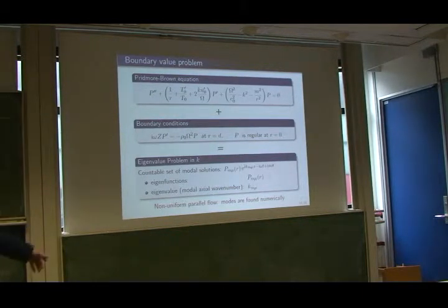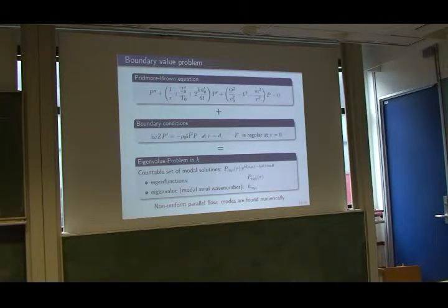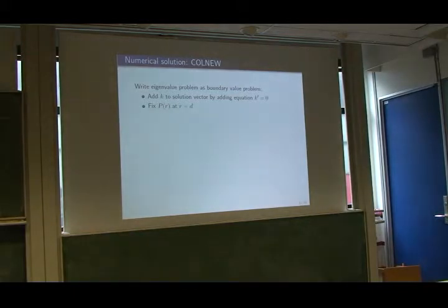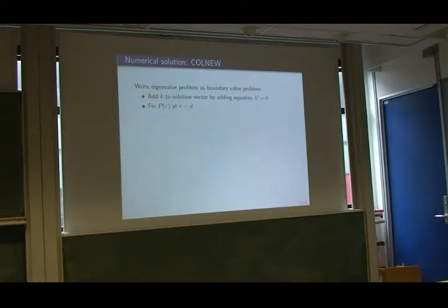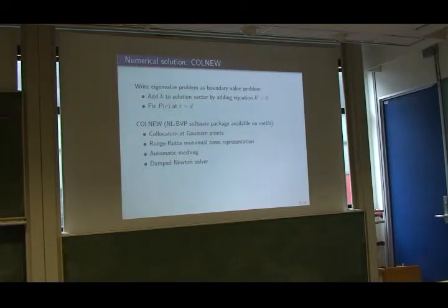This has to be calculated numerically — the equation is too difficult except for the simplified case of uniform flow, where Bessel function solutions exist. We used standard software called col-new, an updated version of col-sys (from collocation system), which is about 25 to 30 years old, so practically all the errors are gone. We write the eigenvalue problem as a boundary value problem by adding the equation K' = 0, fix the normalization, and invoke col-new. This represents about a year's work before everything runs, but then you have an enormously powerful tool.